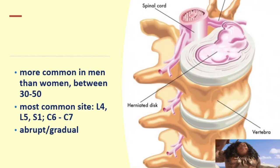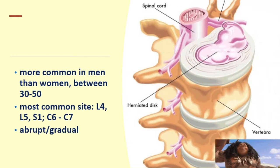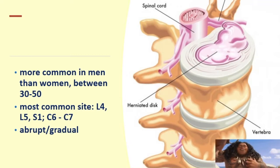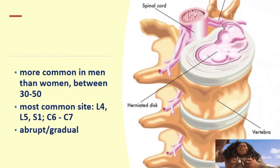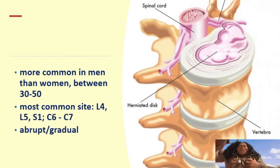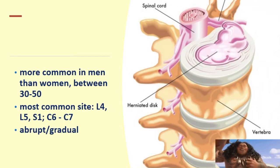This condition is more common in men than in women, between the ages of 30 to 50. The most common sites are L4, L5 in the lumbar area, then S1, and C6 to C7. Onset may be abrupt or gradual, but the tendency is that the patient would notice a sudden onset of pain, though the problem had been developing for a long time already.